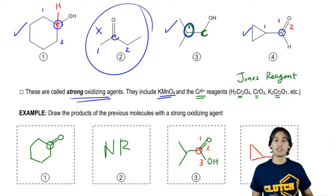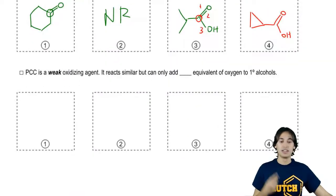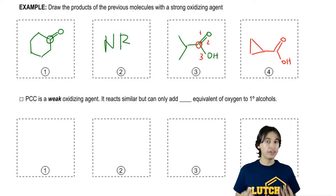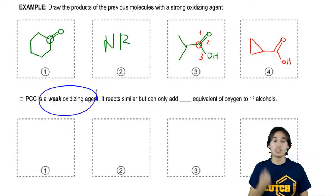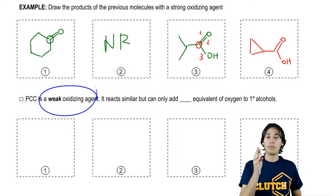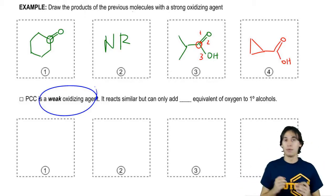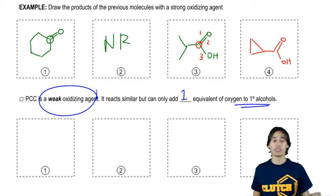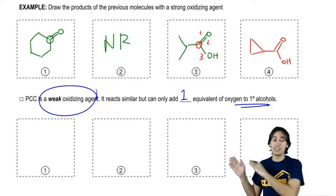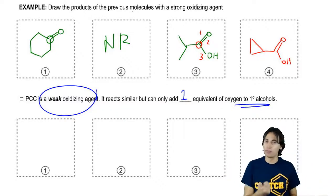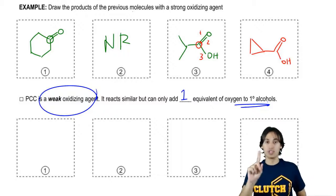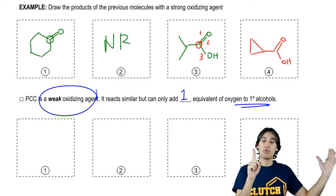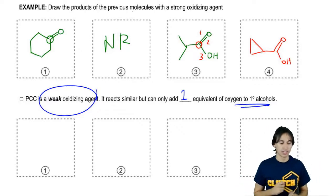Now what I want to do is I want to show you guys another reagent. But it turns out that even though we deal with strong oxidizing agents a lot, there's also a reagent that's called a weak oxidizing agent. Now a weak oxidizing agent would simply be one that doesn't oxidize multiple times. The way that we're going to define it in particular is that it can only add one equivalent of oxygen to primary alcohols. That's really the only difference.